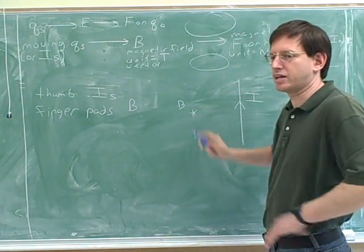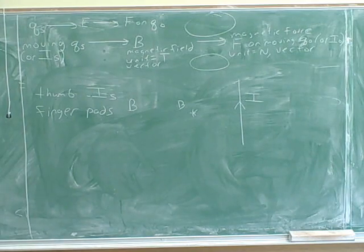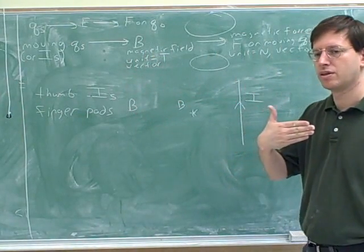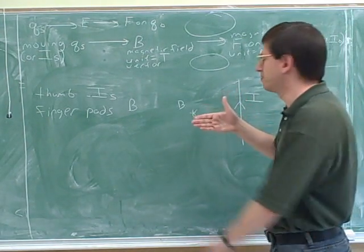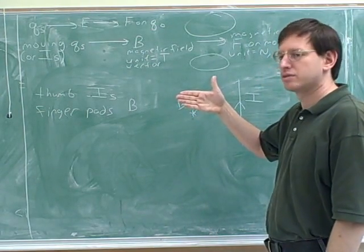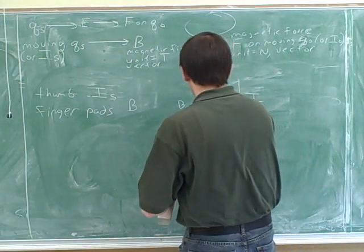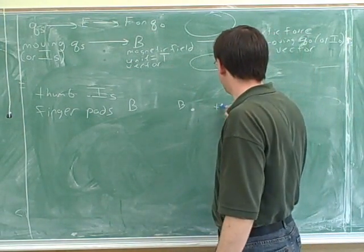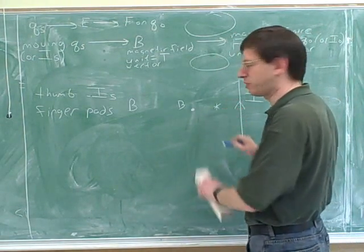Let's figure out the direction of the magnetic field over here. So your thumb is pointing up, your fingers are pointing to the left. Our fingers should be to the left of our thumb, because we're focusing on a point that's to the left of our thumb. And now our pads are coming out of the board. What would be the symbol for that? A dot. Very good.